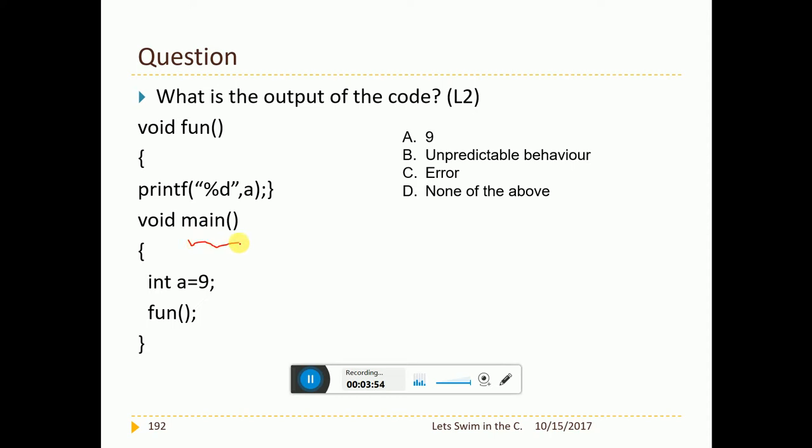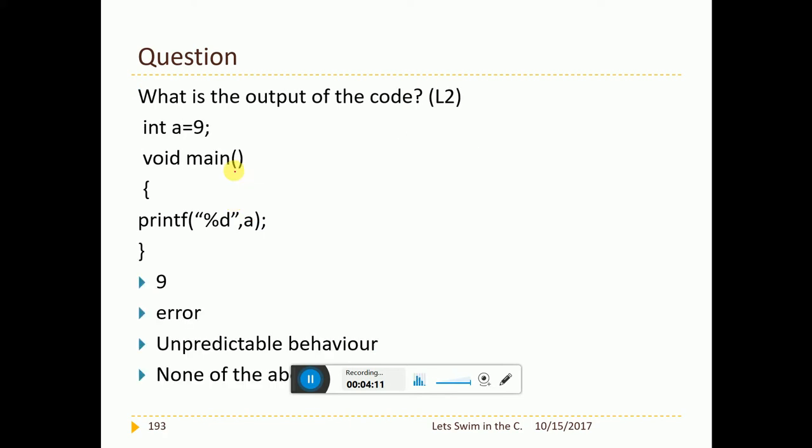Now, I have main here and inside main, I have a equal to 9. I have fun here and the function is called here and here I am printing a. So, what can be output? It is very simple. Whatever variable I have here is not known to the function that is available here. Hence, it is an error. It is very simple. So, the answer is c.